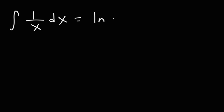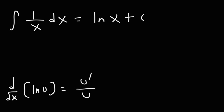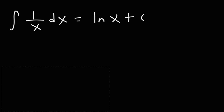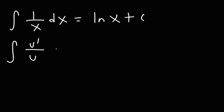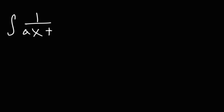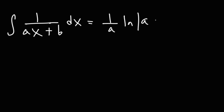Whenever you want to integrate rational functions of degree one in the denominator, you get the natural log function. The antiderivative of 1 over x is ln x, since the derivative of ln u is u prime over u. A similar version is: the antiderivative of 1 over ax plus b equals 1 over a times ln of ax plus b.